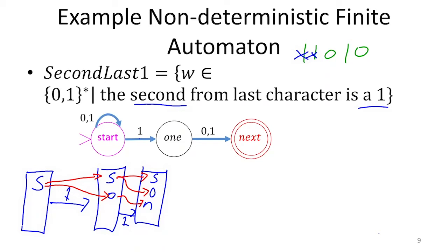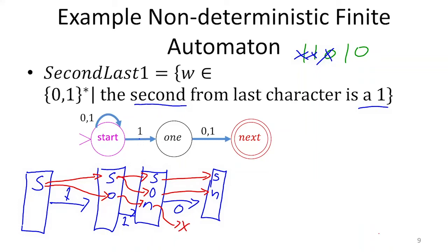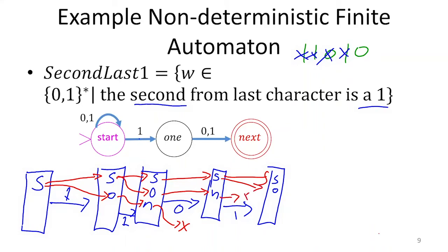Next we read a zero. On a zero, start goes to start; state O on a zero goes to next; but next has no transition on a zero, so it drops out. So now we're in start and next. Then we read a one: start goes to start and to O on a one; next has no transition on a one. So now we're in just start and O.